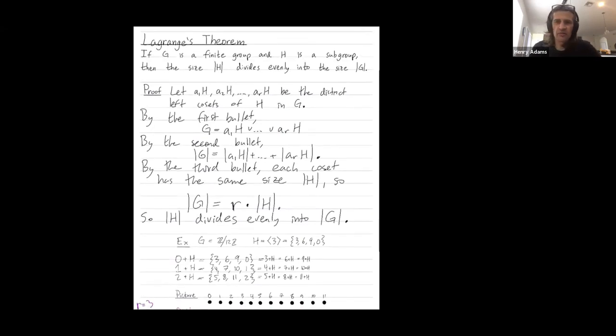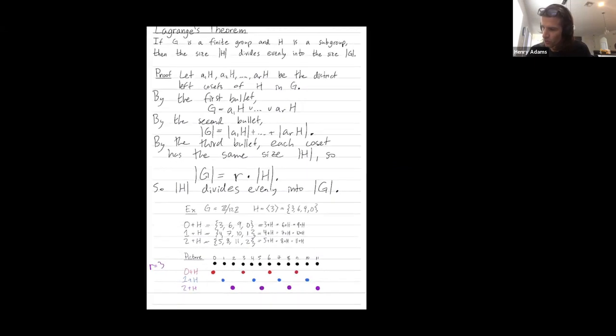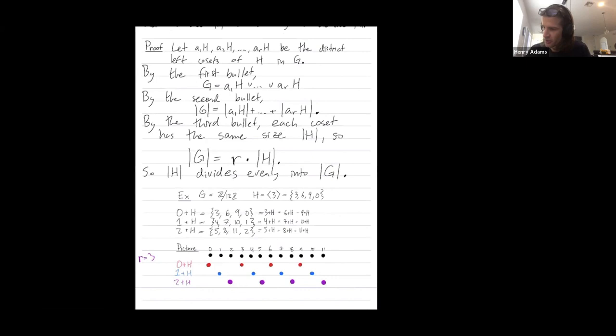So we're trying to prove that if H is a subgroup and G is a finite group, then the size of the subgroup divides evenly into the size of the group. So my running example is going to be Z mod 12Z and my subgroup is the subgroup generated by three.